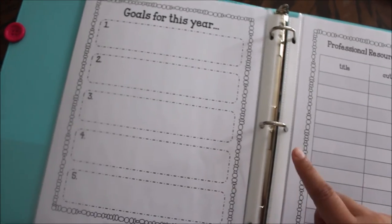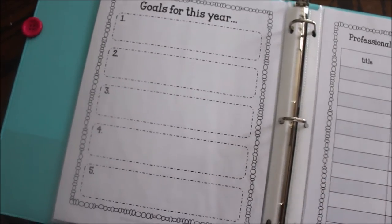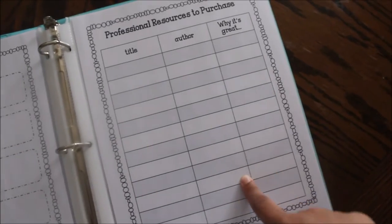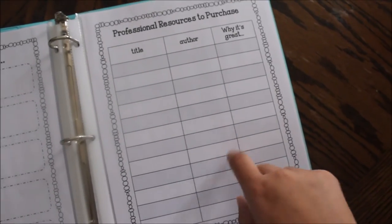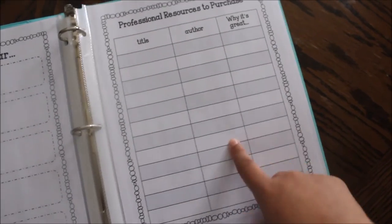Goals for the year, which I have to fill out, whether it be my personal goals as well as Sawyer's goals. I'll put that there. Professional resources to purchase if I want to get, I do want to get a pocket chart for some of his stuff. So I'll put that there.